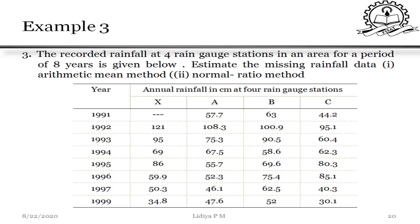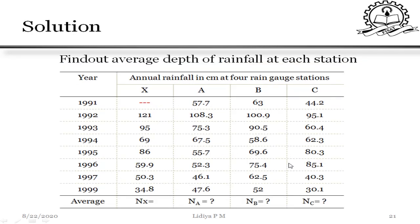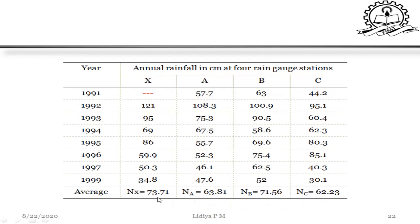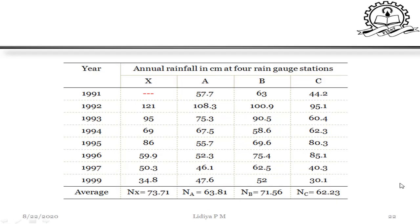Third question: recorded rainfall at 4 rain gauge stations in an area for a period of 8 years is given. Estimate the missing rainfall data using arithmetic mean method and normal ratio method. First step: calculate the average depth of rainfall at each station — NX, NA, NB, and NC. NX has 7 available data points, so sum divided by 7. For the adjacent stations with 8 data points, sum divided by 8. Results: NX = 73.7, NA = 63.81, NB = 71.56, NC = 62.23.